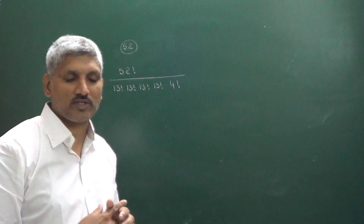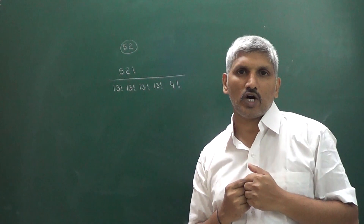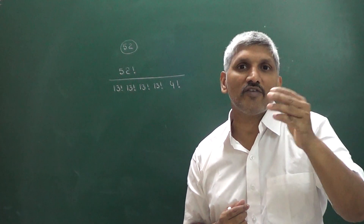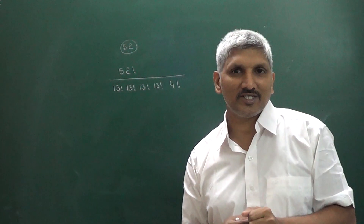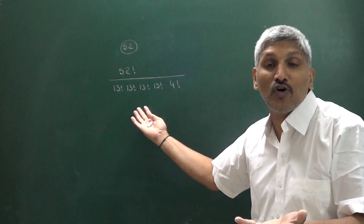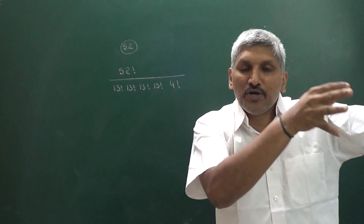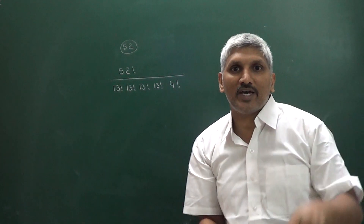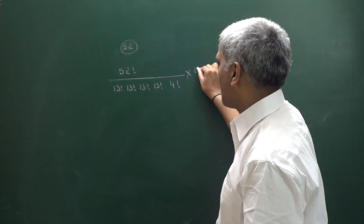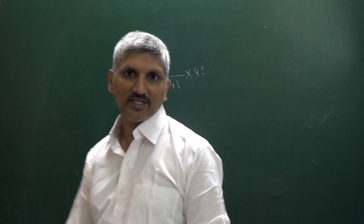Now suppose these 52 cards I want to distribute to 4 different players. We divide into 4 groups, and these 4 groups can be distributed to 4 players in 4 factorial ways. So multiplying by 4 factorial gives the answer for distribution.